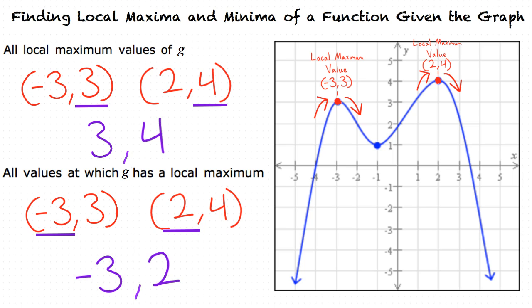To summarize: to find the local minimum or maximum values of a function, we look at the y-values of our local minimum or maximum points. To find the values at which a function has a local minimum or maximum, we look at the x-values. It seems you now have an understanding of how to find local maxima and minima of a function given its graph.